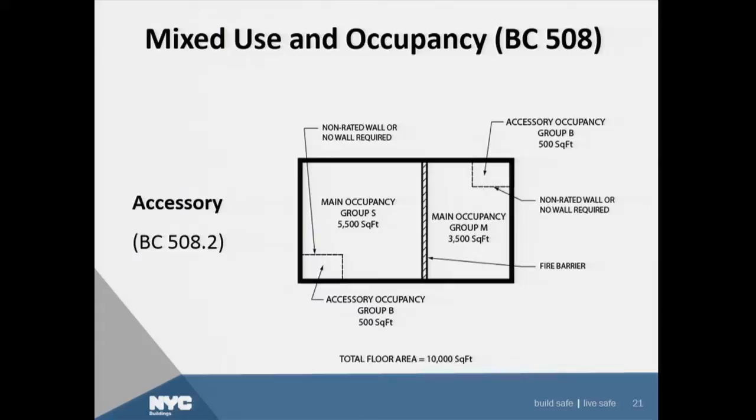There's a diagram showing a fire barrier and two 500 square foot accessory occupancies. An accessory occupancy is limited to 10% of the story — you can't have a whole story and say it's an accessory occupancy. Even in this example, the 500 plus 500 equals 1,000, which is 10% of 10,000, so this is acceptable.